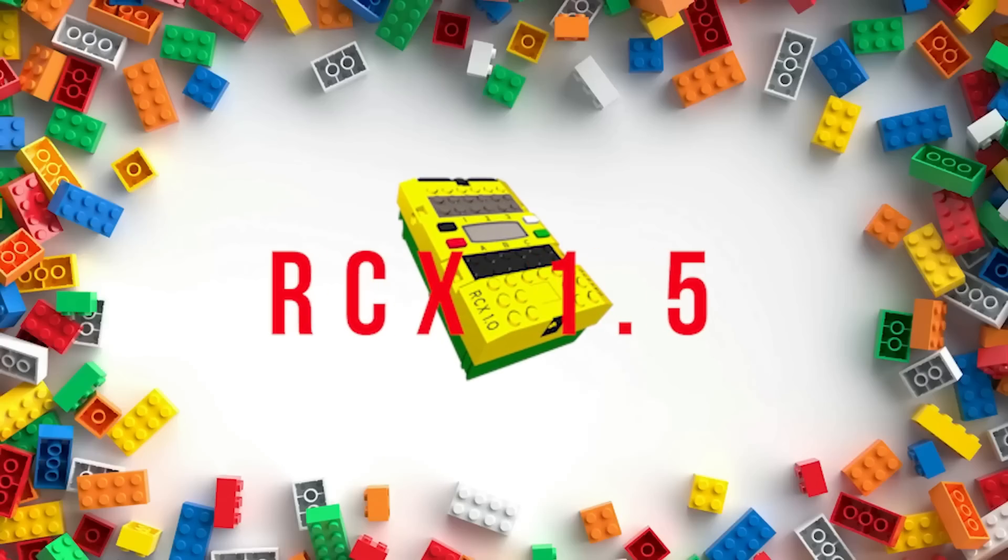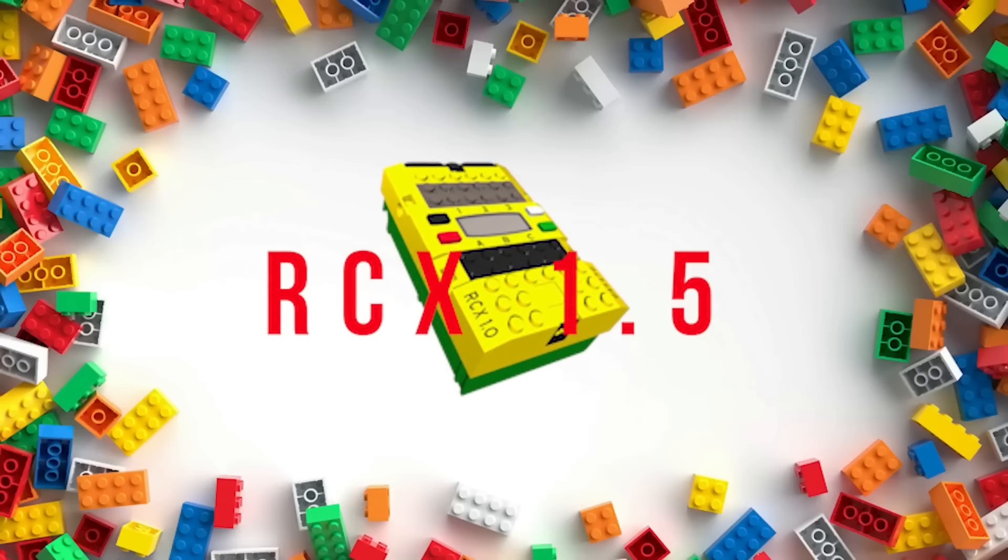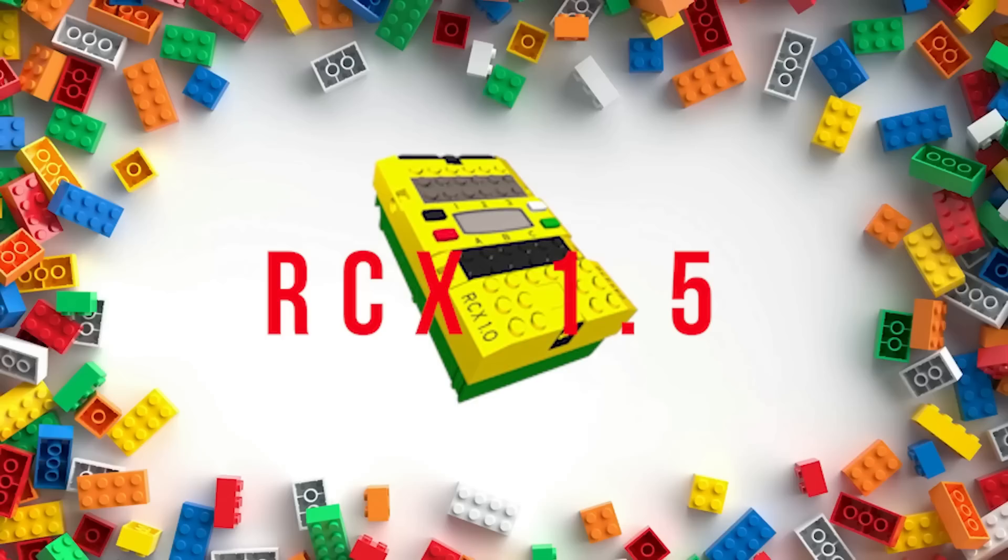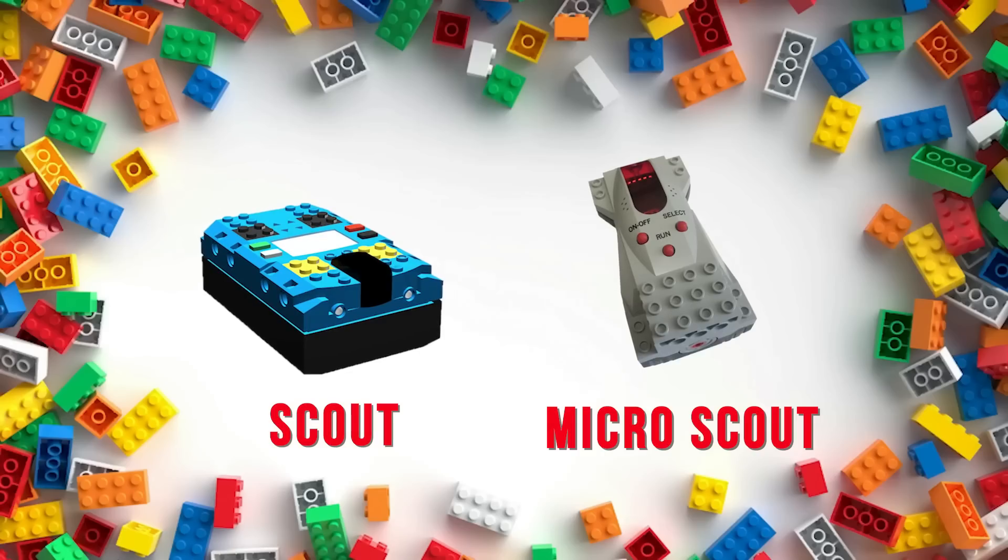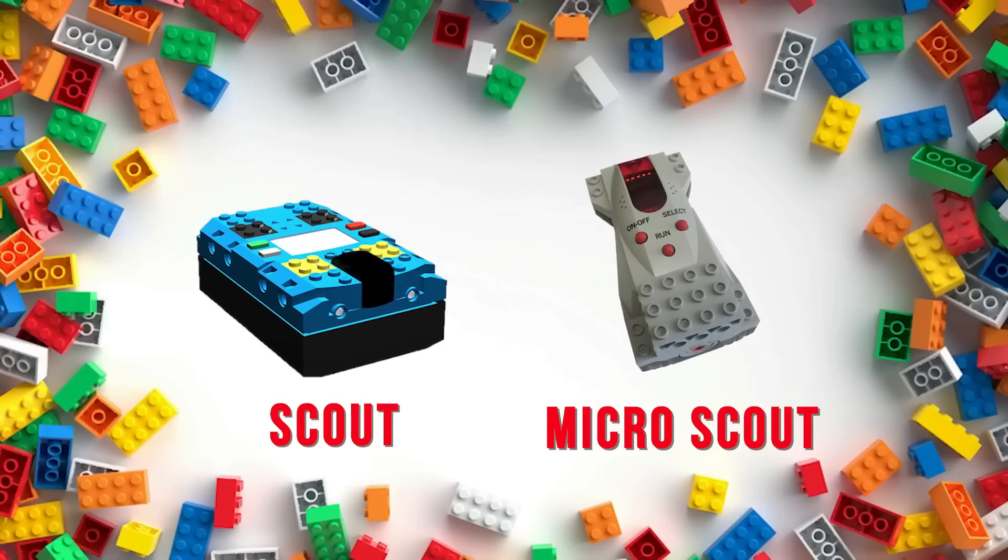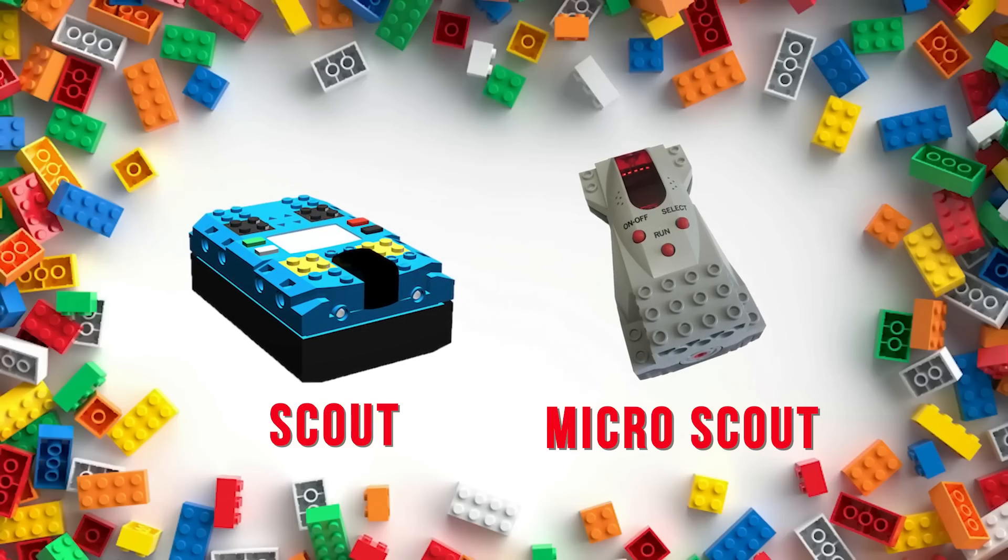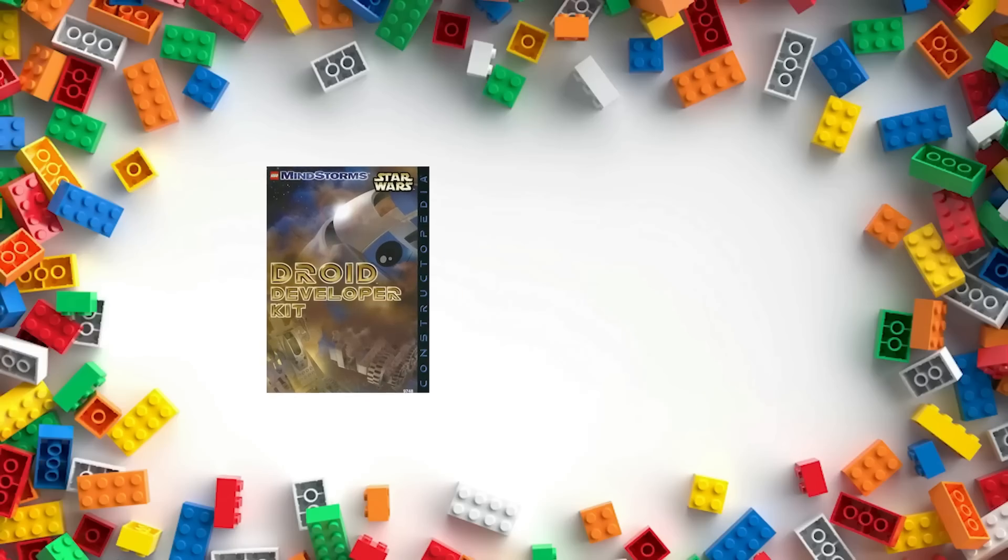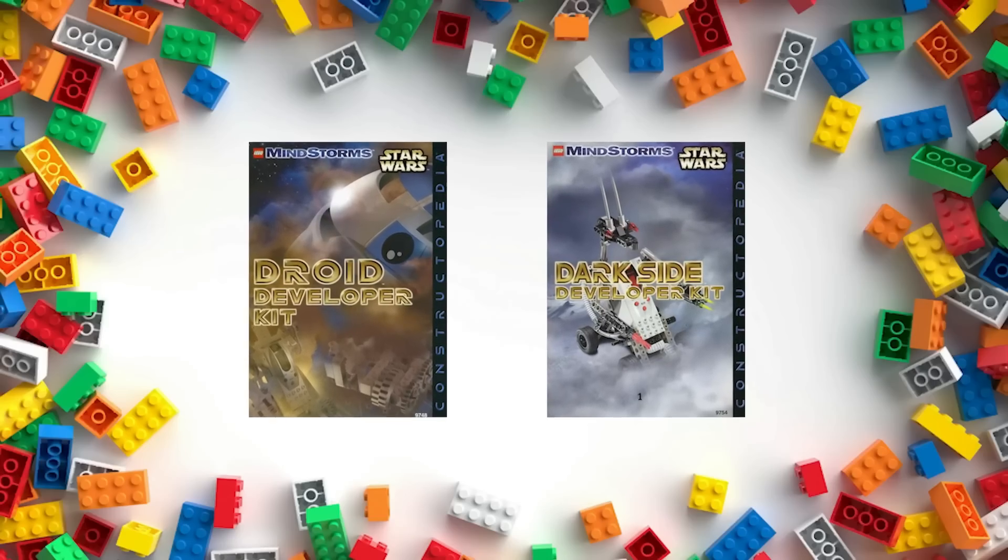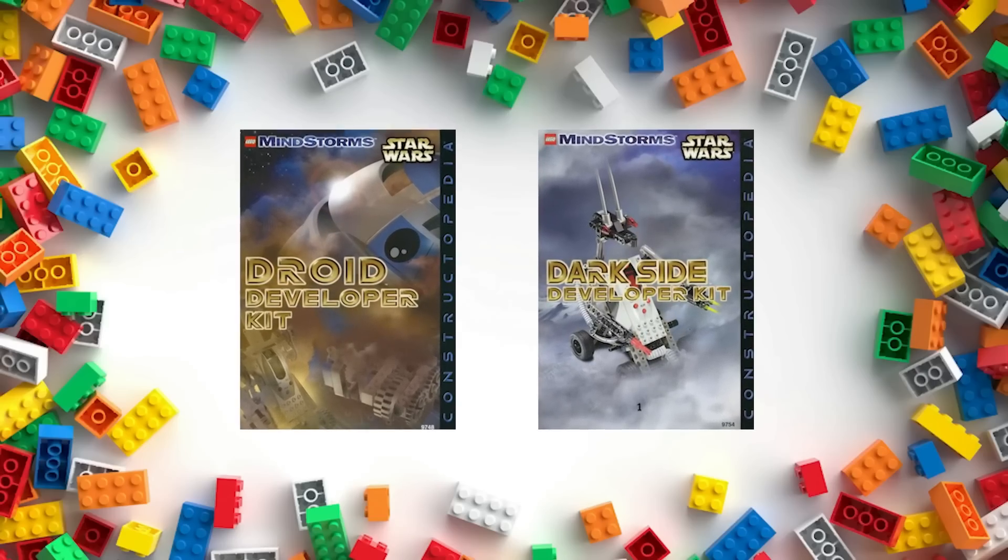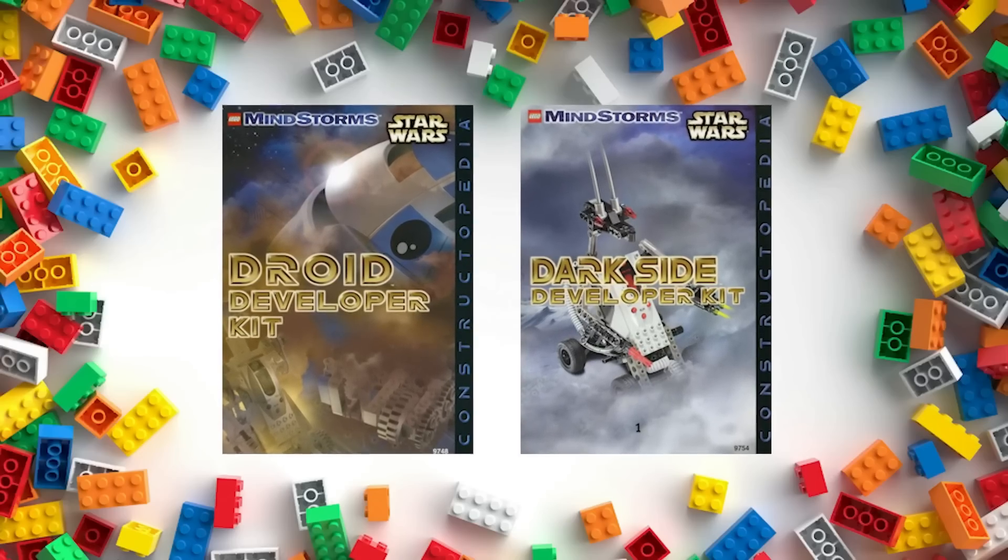The next year, the RCX 1.5 was released. This was identical in every way, except that the power jack had been removed, meaning that it can now only be powered by six AA batteries. In 2000, LEGO put out the Scout and the Microscout. These were smaller, more affordable versions with fewer sensor and motor inputs. The Microscout was sold with the Star Wars Droid Developer and Darkseid Developer Kits. These were the only officially licensed sets ever released under the Mindstorms line specifically, and featured the builds of R2-D2 and an AT-AT walker, respectively.